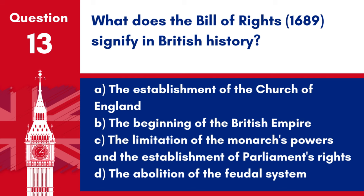Question 13. What does the Bill of Rights 1689 signify in British history? a. The establishment of the Church of England. b. The beginning of the British Empire. c. The limitation of the monarch's powers and the establishment of Parliament's rights. d. The abolition of the feudal system. Answer: c. The Bill of Rights 1689 is significant for limiting the powers of the monarch and establishing the rights of Parliament.